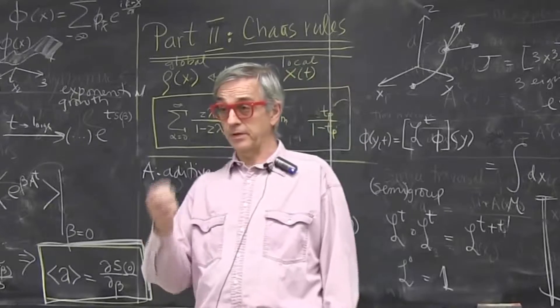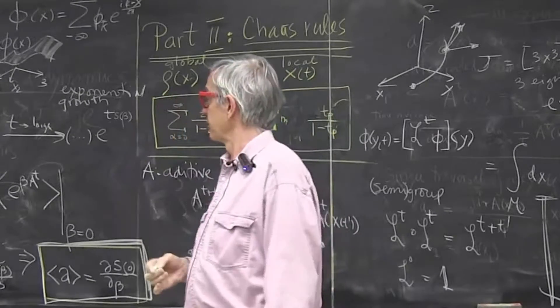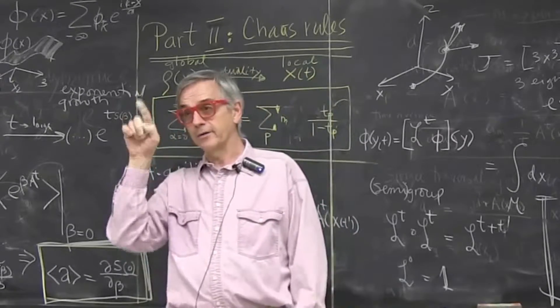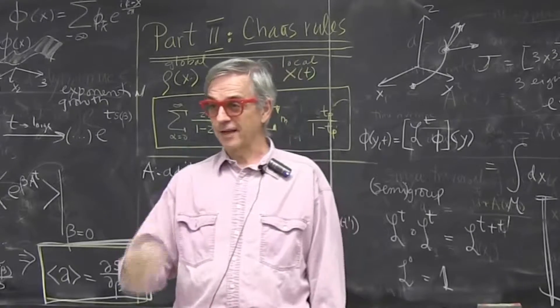In quantum mechanics, we're used to periodicities of measures because we have an operator that has an i over h in it. So that's a thing that likes to oscillate.